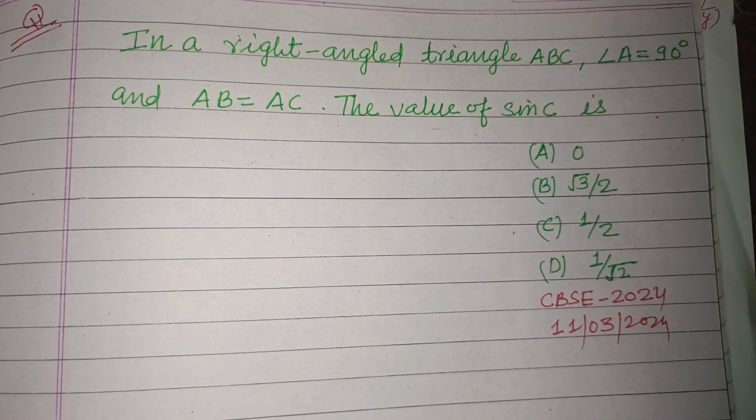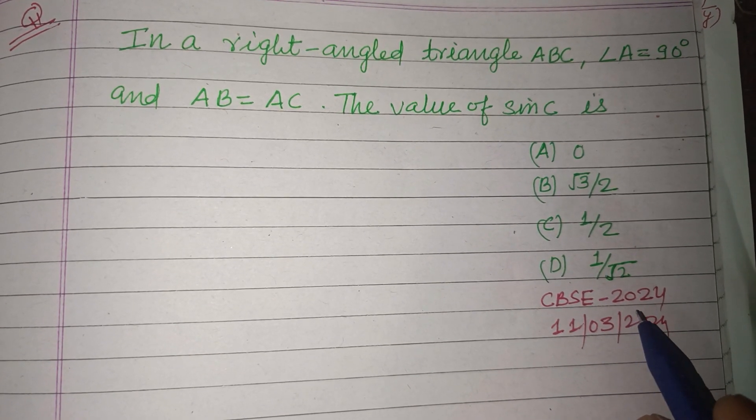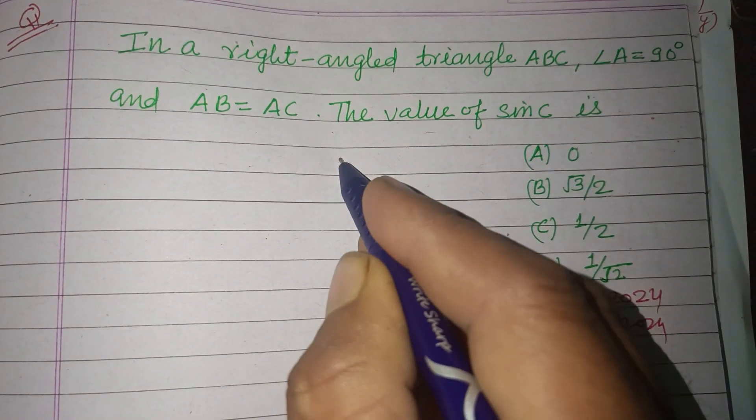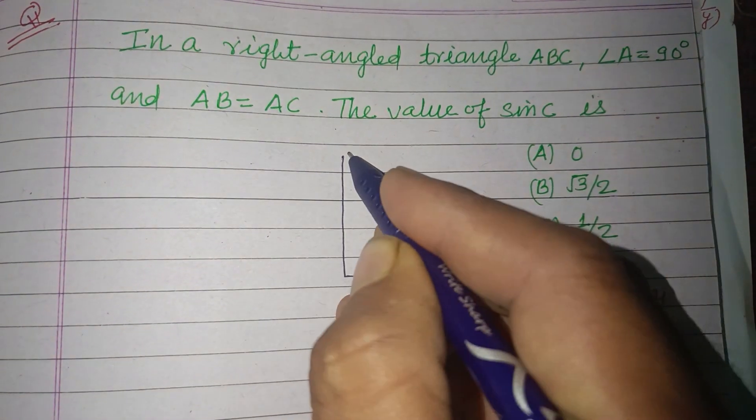Viewers, warm welcome to this YouTube channel. This is a question from CBSE board exam 2024. In a right-angled triangle ABC, ABC is a right-angled triangle.